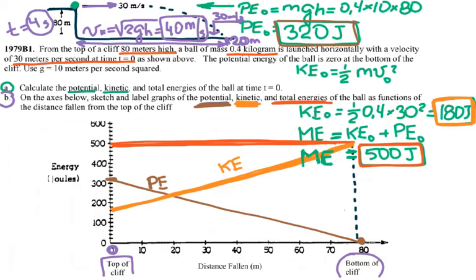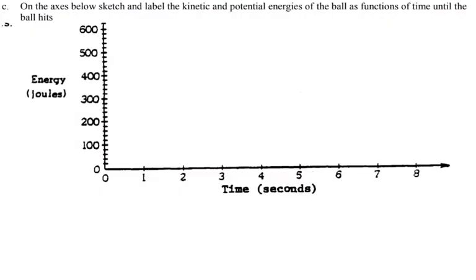For part C, we use time on the x-axis. The time to fall is 4 seconds, calculated from the change in vertical velocity — 40 meters per second — divided by acceleration of 10, giving 4 seconds. So the object lands at t equals 4 seconds.